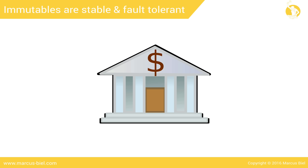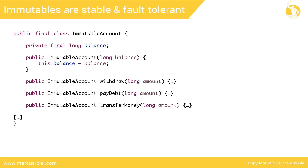In case of an attempt to overdraw the account, an illegal argument exception will be thrown. The bank wants us to implement a variety of functions for their clients — for example, withdraw, pay debt, and transfer money. To enforce the rule that the account's balance must never be negative, we have to call the validation method from all these methods. This seems like a lot of duplicated code — there must be a better way. Pause the video here and think of an alternative way to make sure that none of these methods would overdraw the account's balance.